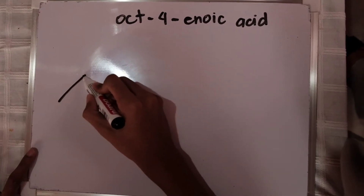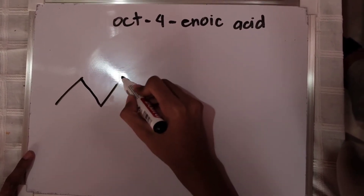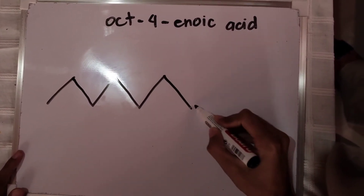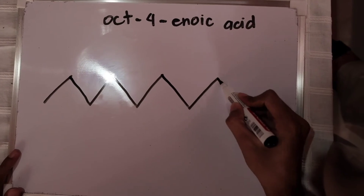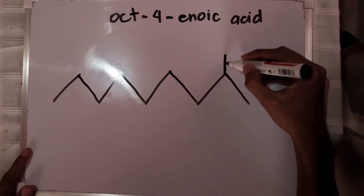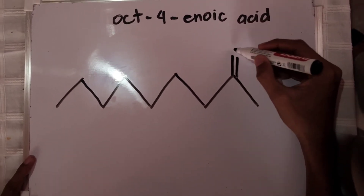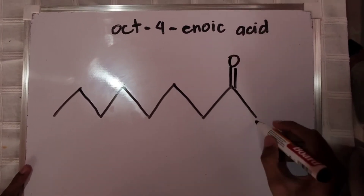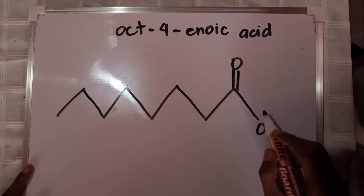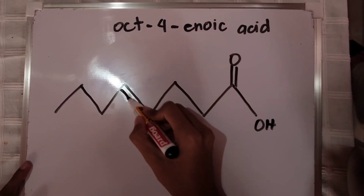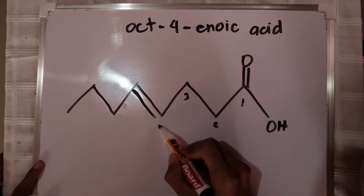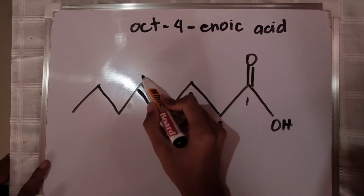Next, we have oct-4-enoic acid. To draw its structure, we start again by its parent chain which has 8 carbons and add the functional group COOH to the end or start of the parent chain. And we have to put an alkene at carbon 4.